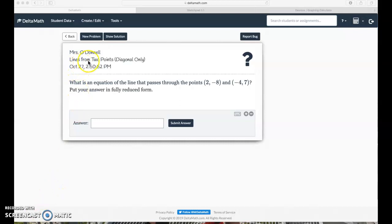Okay, next we have lines from two points, and we're not dealing with vertical or horizontal lines at all. We're only going to have lines that are on the diagonal. So what is an equation of the line that passes through the points 2, negative 8, and negative 4, 7?